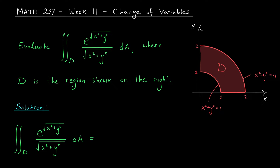These are regions where one of the variables, let's say x, is bounded between two constants, whereas the other variable y is bounded between two functions of x. But in certain situations you may have to integrate over more complicated regions, regions that can't be so easily viewed as just type 1 or type 2.